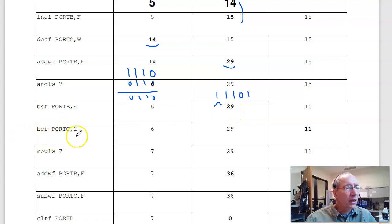I want to clear bit number 2 of port C. So 15 is 1, 1, 1, 1. Here's bit 0, 1, 2. Clear this bit gives me 1, 0, 1, 1, which is binary 11.